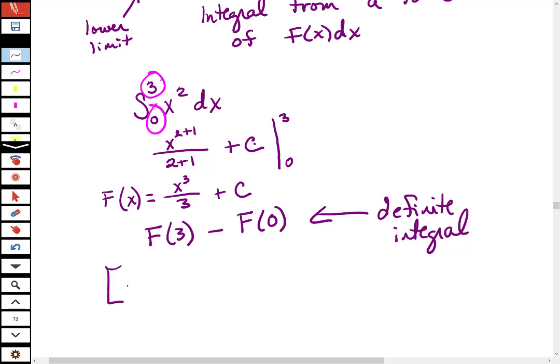So for this one, I'm going to take 3 and I'm going to plug it in wherever x is. Like right here, right? So I'm going to take 3 cubed over 3 plus c. And I'm going to subtract, that's F of 3, 0 cubed over 3 plus c.